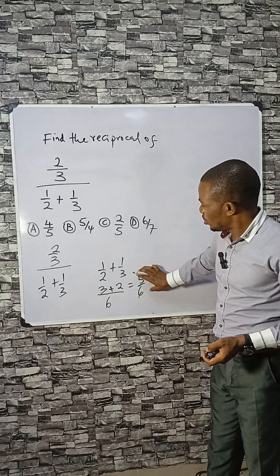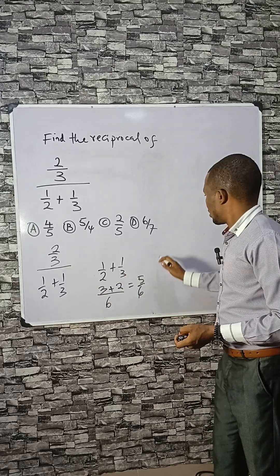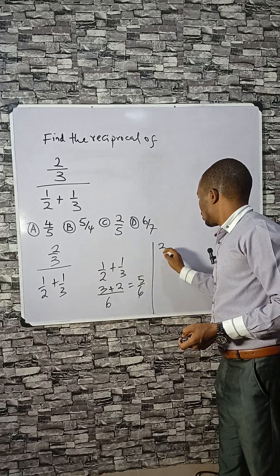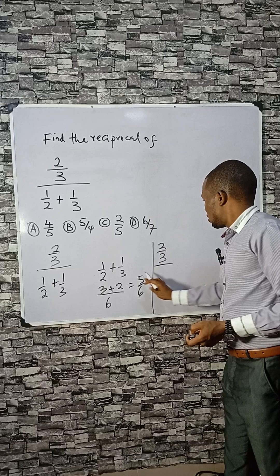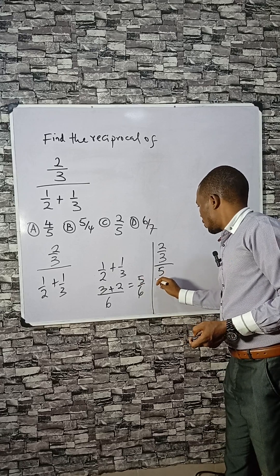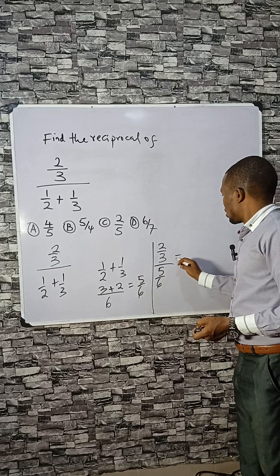Now this is the denominator, then we go back here. 2 divided by 3, which is this, and divided by the denominator 5 over 6.